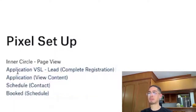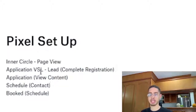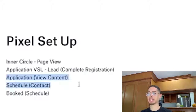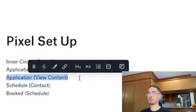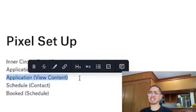Now it's time to actually put the event codes on the back end of the funnel. As somebody goes to the application VSL, that means they became a lead — they went to the second step and put in their email to get access to that sales video. Now after they actually click the button to get to the application, I'm going to assign View Content because I didn't get any contact information or any purchase — it's literally just: they went to the application page, they're just viewing content.